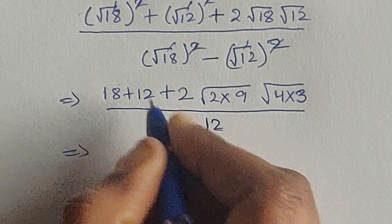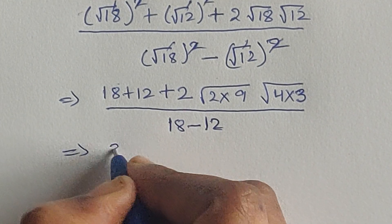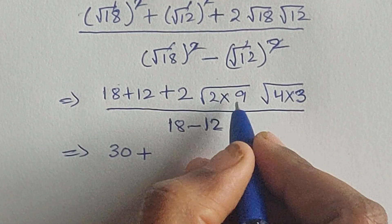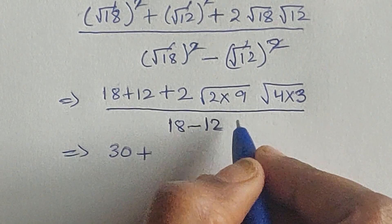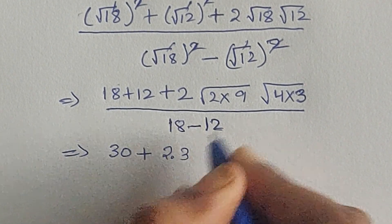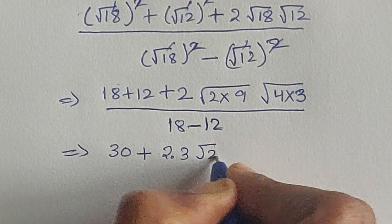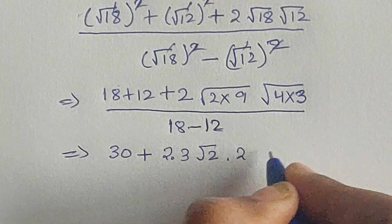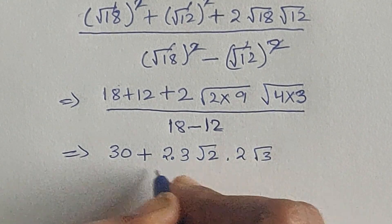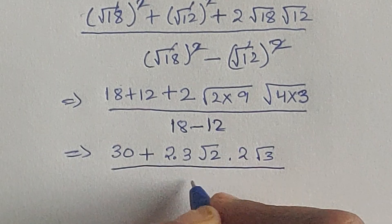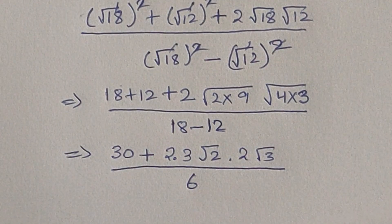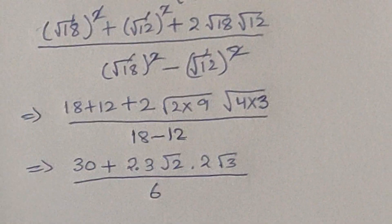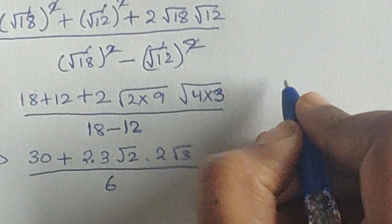So now: 18 plus 12 equals 30, plus 2 times — square root of 9 is 3, and square root of 4 is 2 — so 2 times 3 times 2 times square root of 2 times square root of 3. The denominator is 18 minus 12, which equals 6.